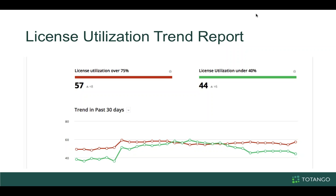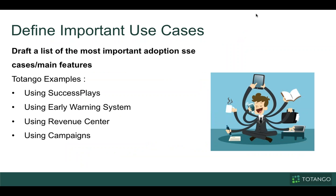Looking at that trend over time — is it going up? We can see on the tail end that utilization is going up, so that's good, and fewer customers are in that zone of not leveraging the product. We can also look at this based on different segments — by customer success manager, contract value, what they're going to renew. The other thing we're going to need to do is define important use cases. Using Tatango as an example, there are four main things we're looking at.